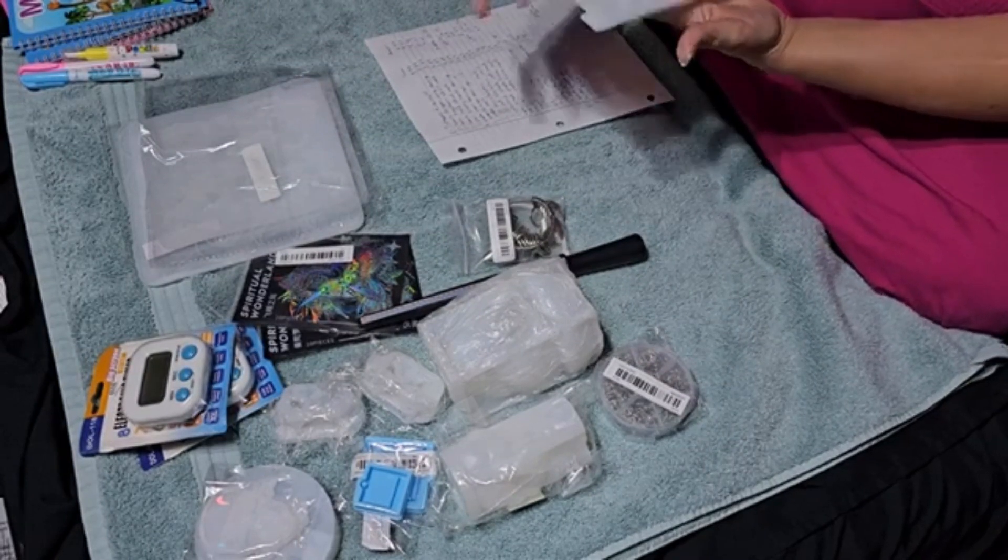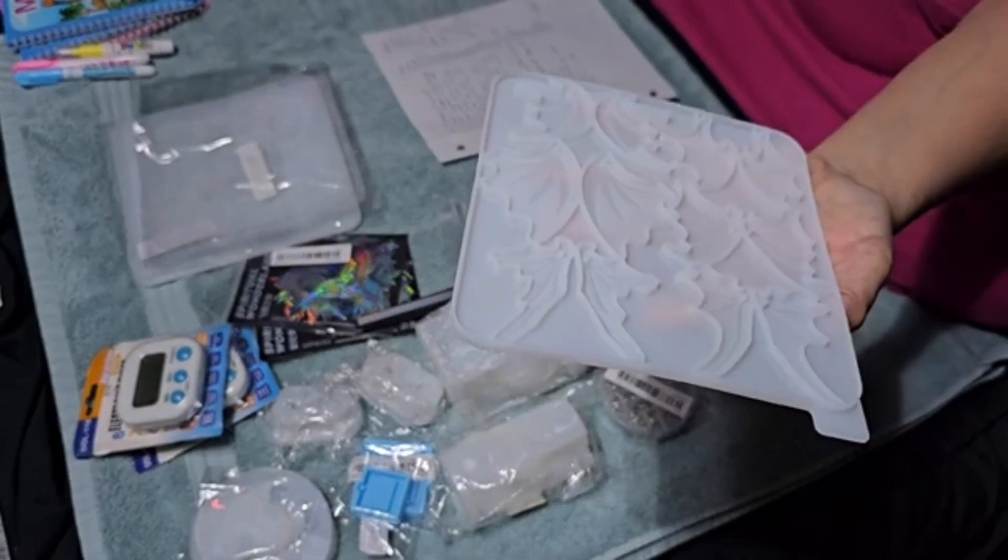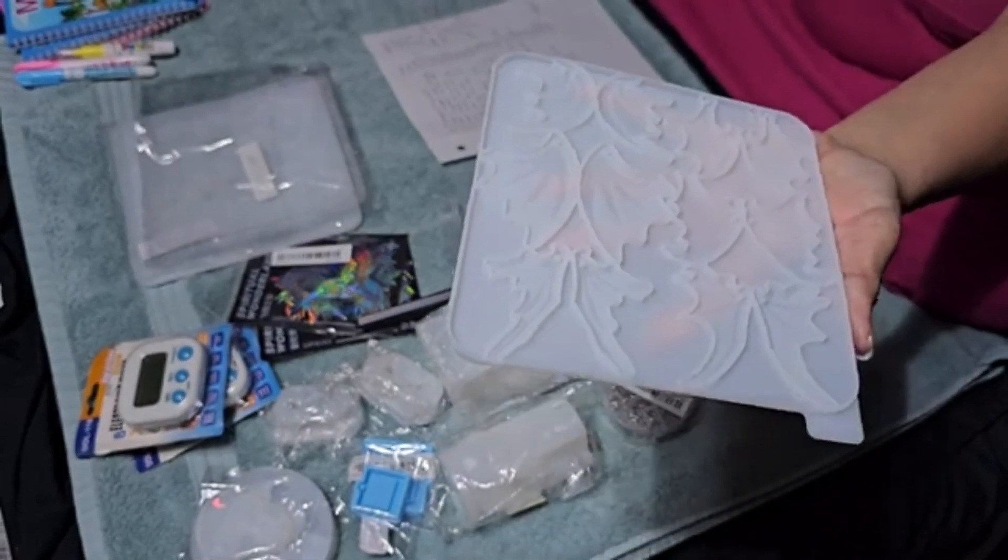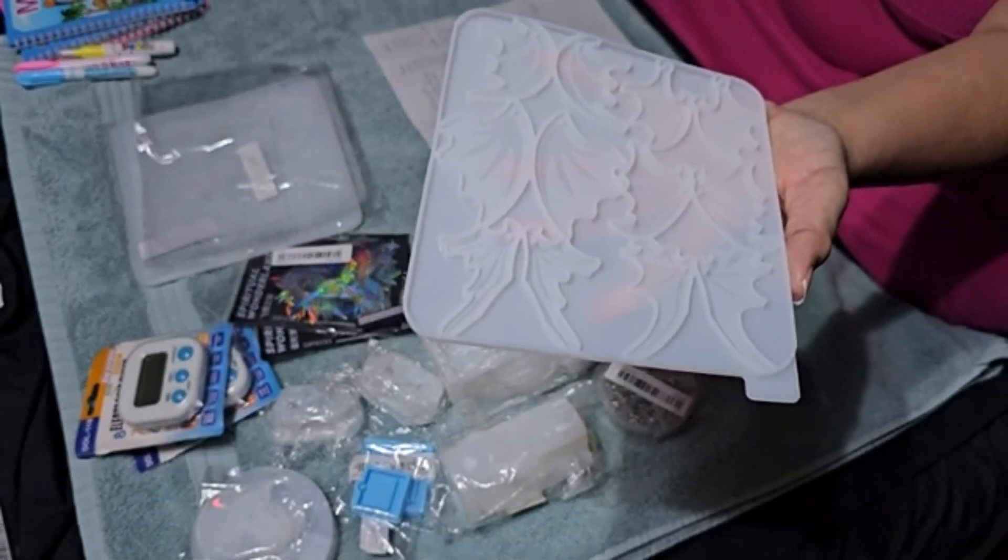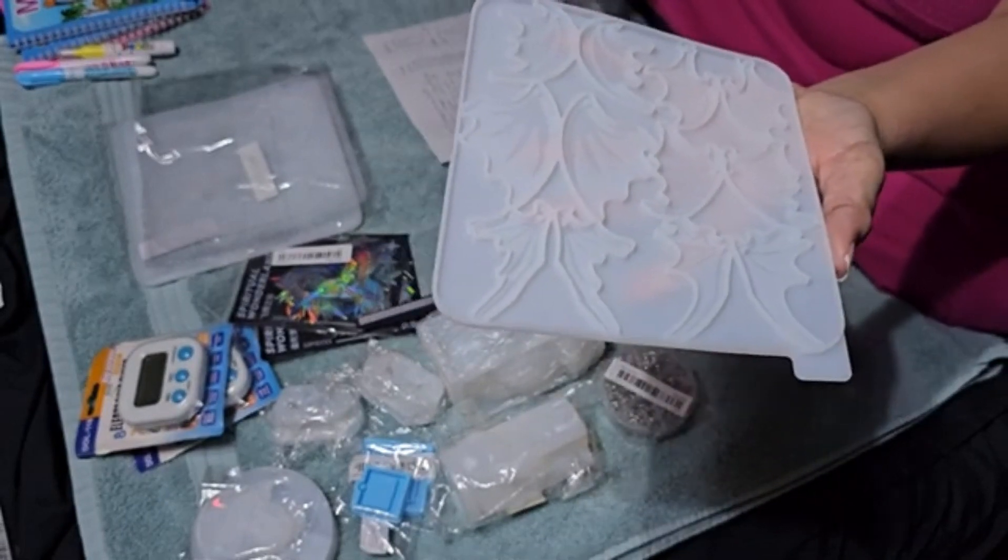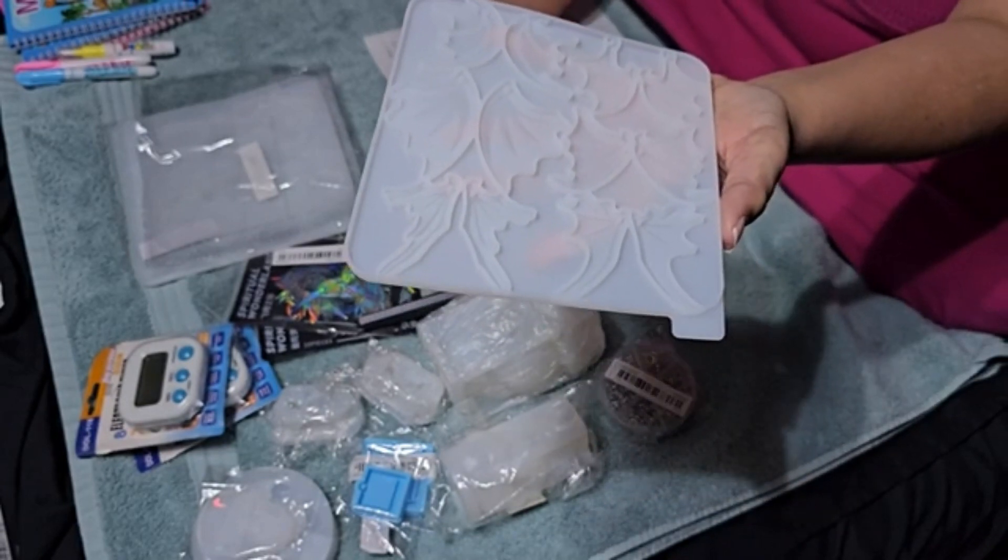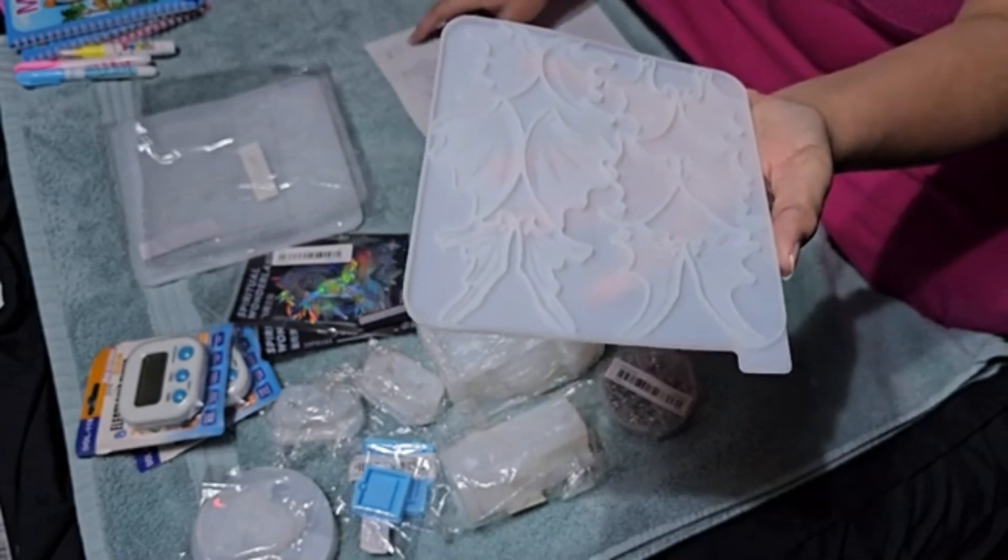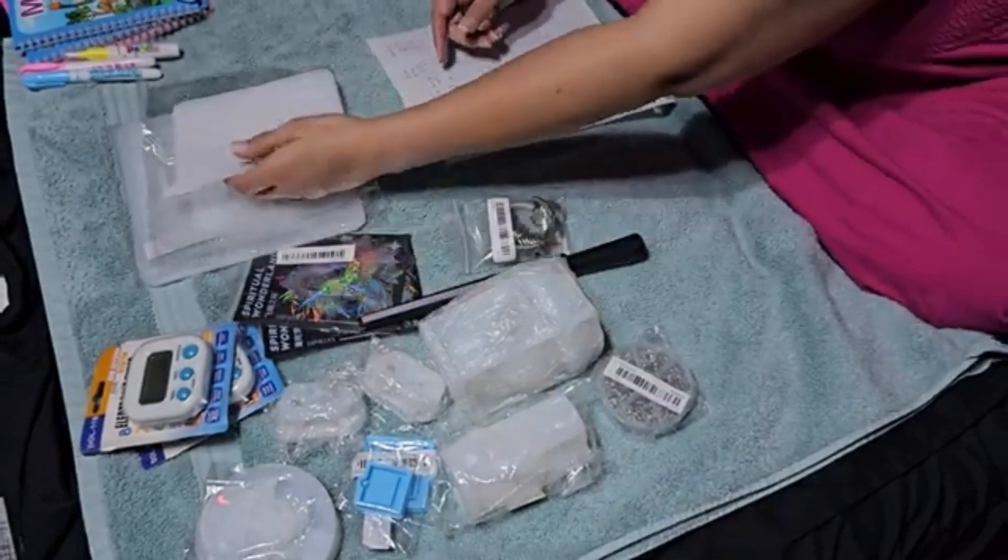And these are dragon wing earrings and it's pairs. There's six pairs. That was dragon wing, $3.99 on Temu, and Amazon had them for $7.99 for the exact same mold that I found.